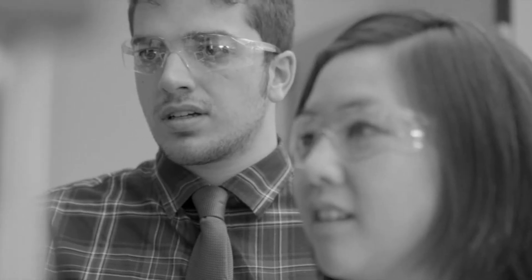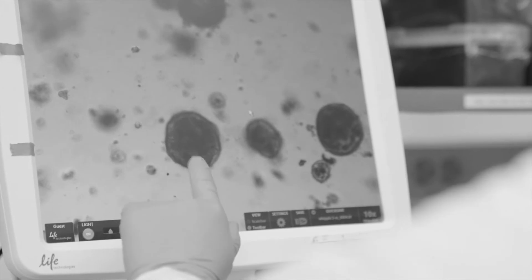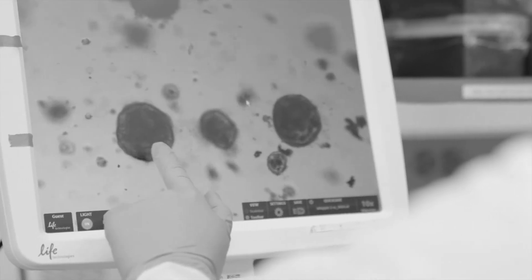So one of the things we are doing in the lab, and this is really a team effort, is generating something that's called organoids. Those are little three-dimensional structures that can be grown from a patient tumor that we are taking from biopsies.